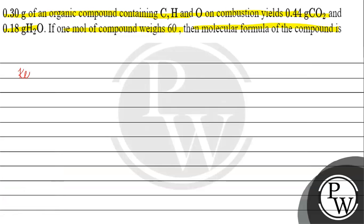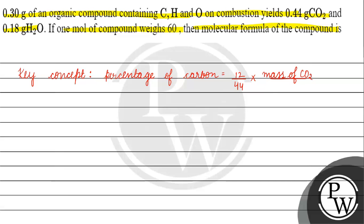The key concept for this question: if we know the mass of the organic compound and the mass of carbon dioxide, we can find the percentage of carbon. The formula is: percentage of carbon equals (12/44) multiplied by mass of carbon dioxide, divided by mass of organic compound, multiplied by 100.